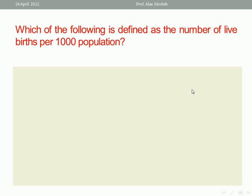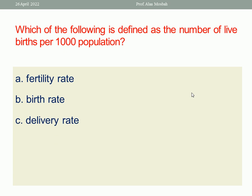Next question: Which of the following is defined as the number of live births per 1,000 population? Options: fertility rate, birth rate, delivery rate, or fertility index. The best one response here is birth rate, because this is the definition of birth rate.